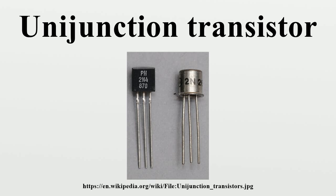The unijunction transistor was invented as a by-product of research on germanium tetrode transistors at General Electric. It was patented in 1953. Commercially, silicon devices were manufactured.